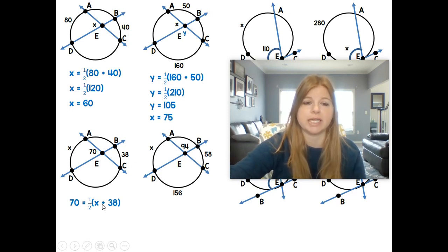Now there's a couple ways to solve this. We can distribute the one half. I tend to just like to eliminate the fractions from the beginning and just multiply both sides by 2. If I multiply both sides by 2, 70 times 2 is 140. One half times 2 is just 1.